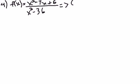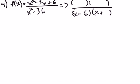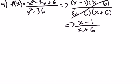For number 4, factor everything. The bottom is a difference of two squares. The top factors to x minus 1 times x minus 6. This is very interesting — x minus 6 cancels from top and bottom. So this simplified function is what I'll base all my answers on, except for one thing: there will be a hole at x equals 6. The vertical asymptote is just x equals negative 6, from setting the remaining denominator equal to zero.